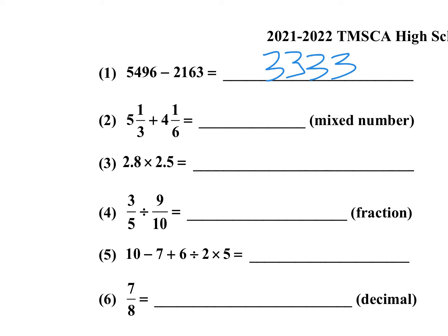Number two: five and one-third plus four and one-sixth as a mixed number. We need a common denominator of six, so one-third is equal to two over six. Two over six plus one over six is three over six — you cannot write three over six, you have to write one-half, always reduce. Then five plus four is nine, so the answer is nine and one-half.